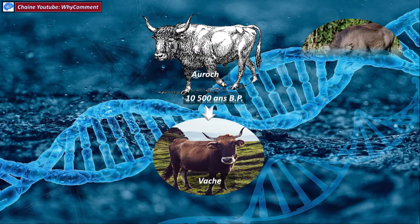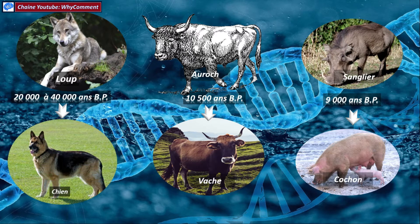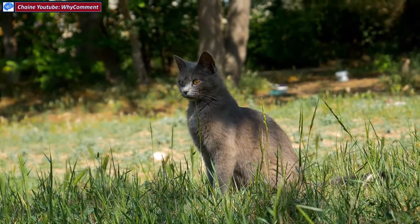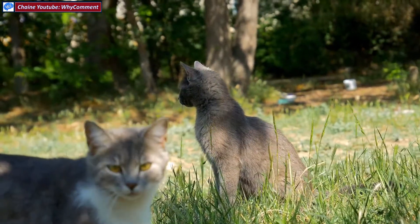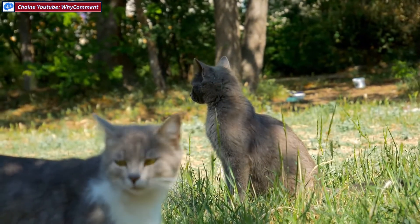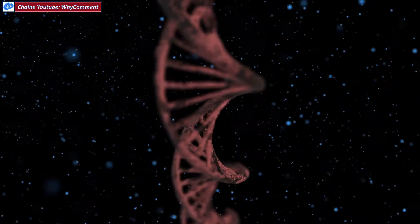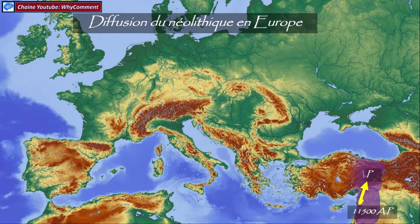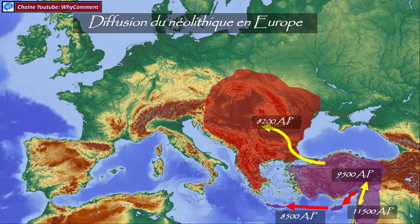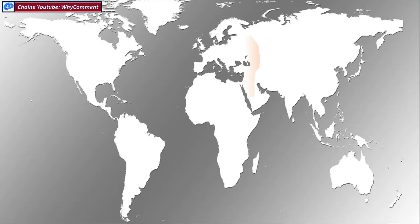Contrairement aux aurochs qui ont donné les vaches, aux sangliers qui ont donné les porcs, aux bébés loups qui ont donné les chiens, l'homme n'avait pas exercé une pression de sélection sur les chats sauvages — ils avaient déjà toutes les qualités souhaitées. Ceci explique le peu de divergence entre les chats domestiques et les chats sauvages. Un chat domestique peut s'hybrider avec n'importe laquelle des quatre sous-espèces de chats sauvages, et garde encore tout son instinct de chasseur. La diffusion du chat lybica, à l'origine du chat domestique, a été très rapide — il a suivi la même route de migration que les premiers agriculteurs d'Anatolie.